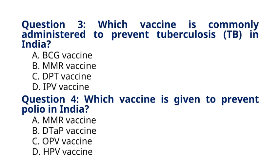Question 4. Which vaccine is given to prevent polio in India? A. MMR vaccine. B. DTaP vaccine. C. OPV vaccine. D. HPV vaccine. The correct answer to question 4 is option C, OPV vaccine. The oral polio vaccine, OPV, is given to prevent polio in India as part of the polio eradication program.